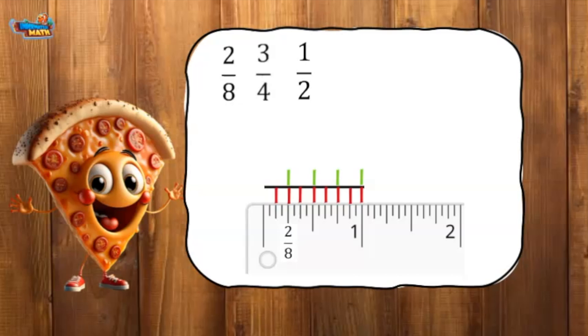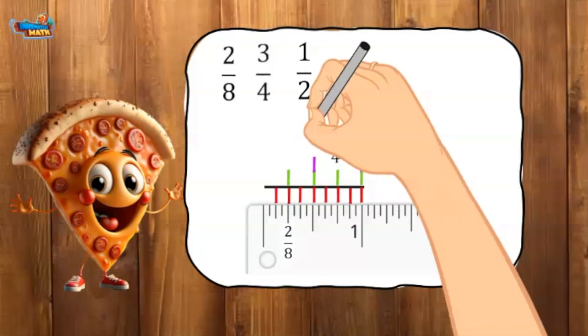The numerator is three. I label the third fourths. Now I use a different color to represent halves on the number line. The numerator of the third fraction is one. I label one half on the ruler.